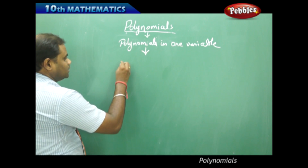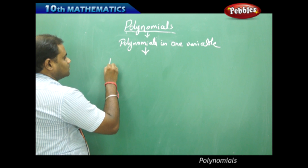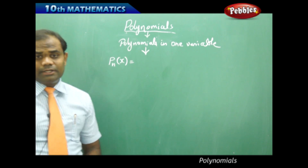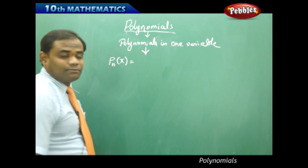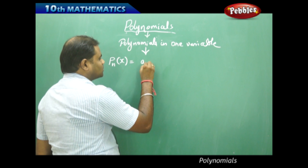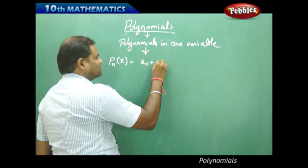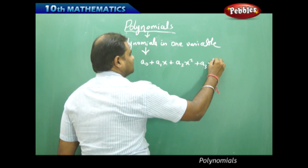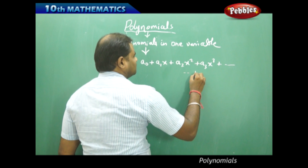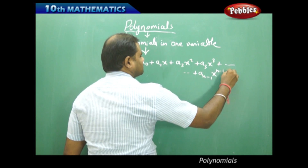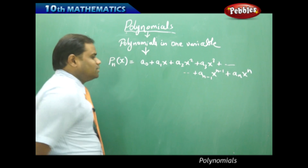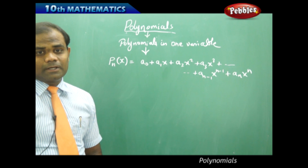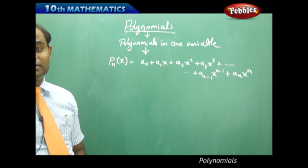A polynomial in one variable is generally denoted by Pn of x, and it is defined as an algebraic expression which consists of constants and variables in a specific form. This is how we define a polynomial in one variable x, consisting of n plus 1 terms.